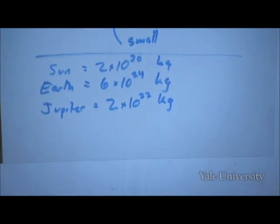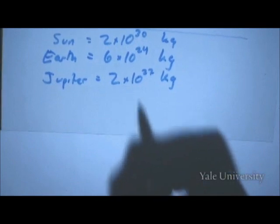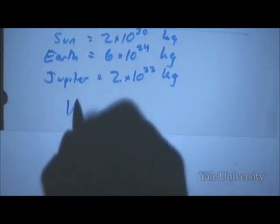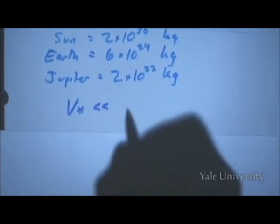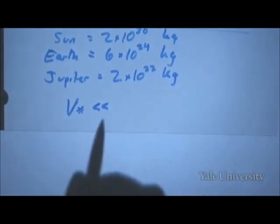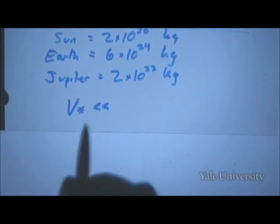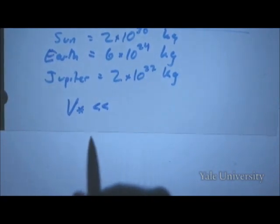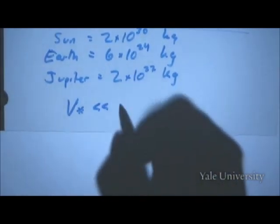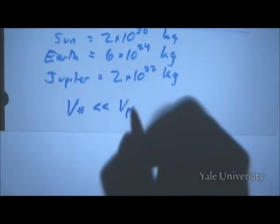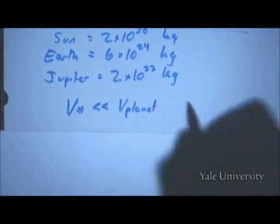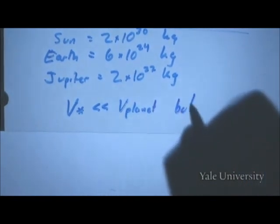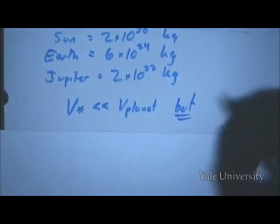The consequence of this, because the masses are so much smaller, is that the velocity of the star is much, much less than the velocity of the planet. But it can nevertheless be detected.